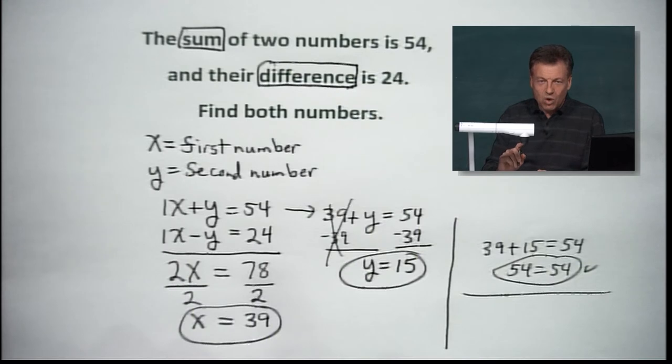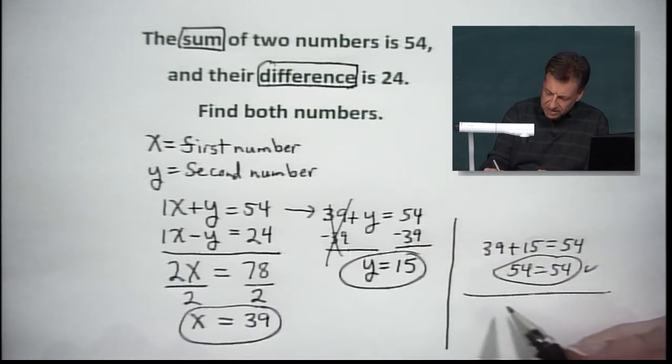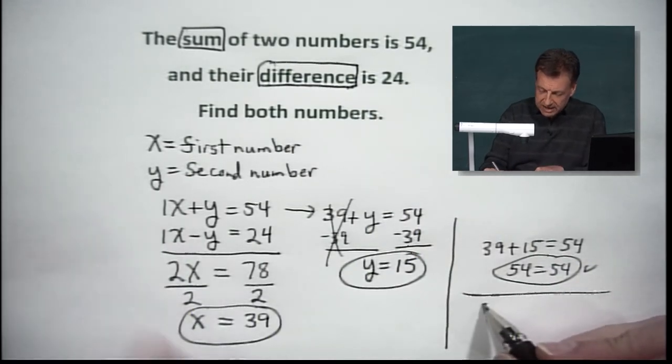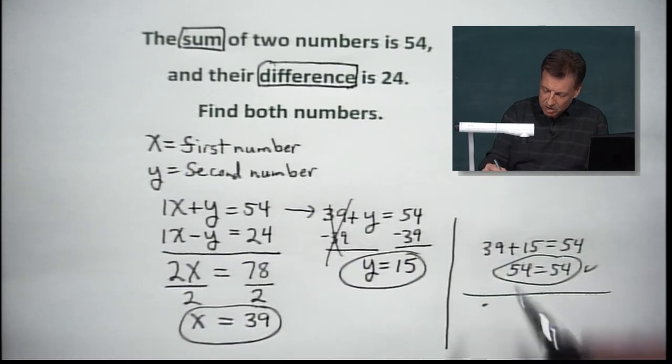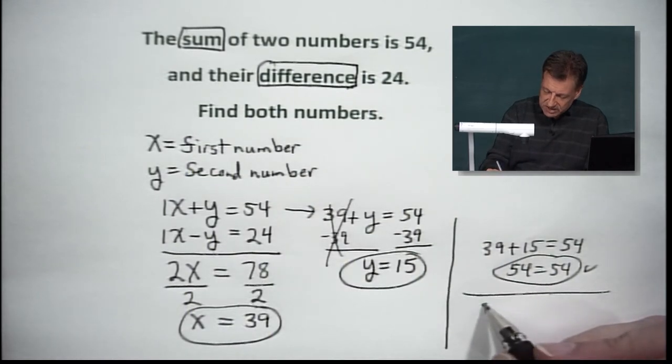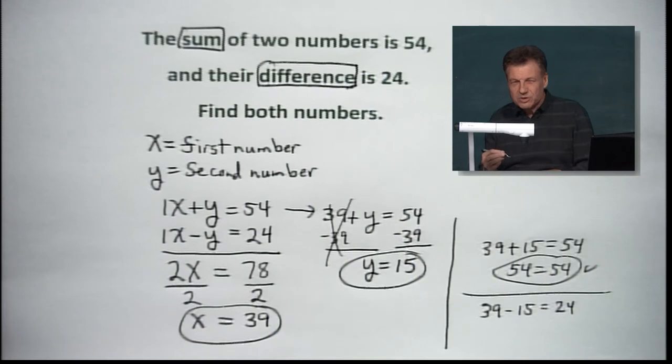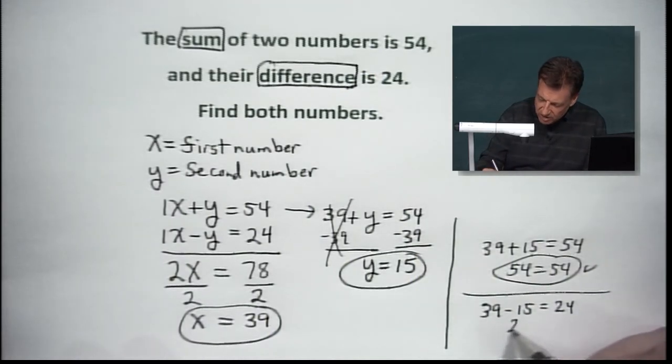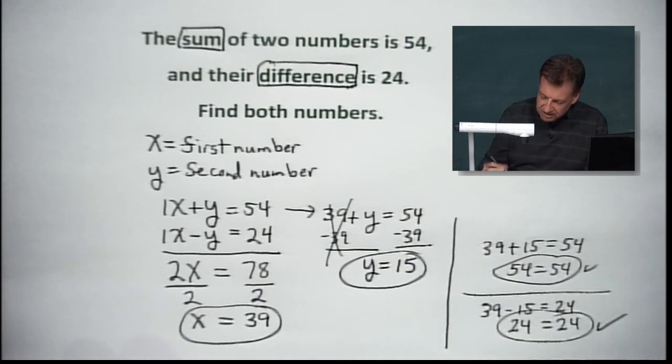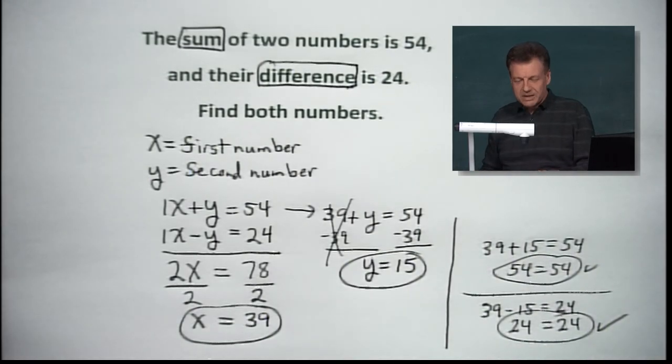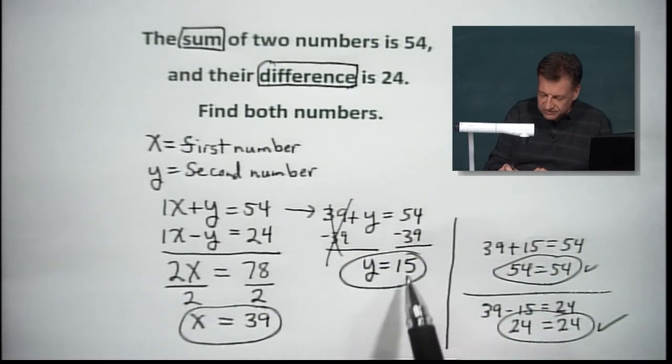Now the question is, does the other one work? Because we didn't really use it, did we? So we're going to say, let's put in our little X minus Y moment. And we're going to see what we get. We got 39 minus 15. Do we get 24? That's the big question mark. I think most of you are already out there doing it in your head. You say, yes, we do. And that means I've got some good numbers there. 39, 15.